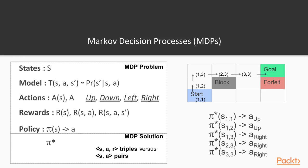So these four concepts by themselves — states, model or transition model, action, and reward — combined with the Markovian property, define what is known as an MDP. An MDP may be considered a problem. So we have one more concept to discuss, and that is policy. Whenever we have a problem like an MDP, we also want to have a solution. The solution to an MDP is a policy.